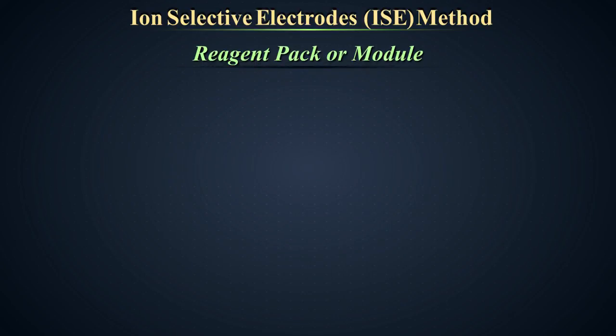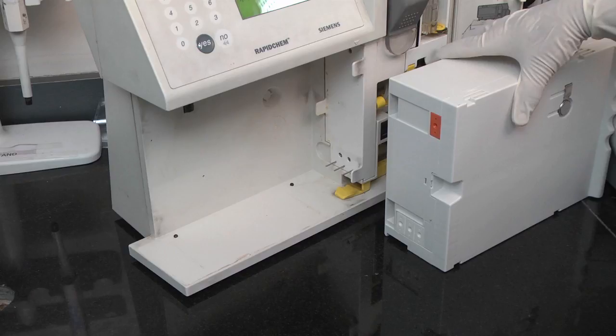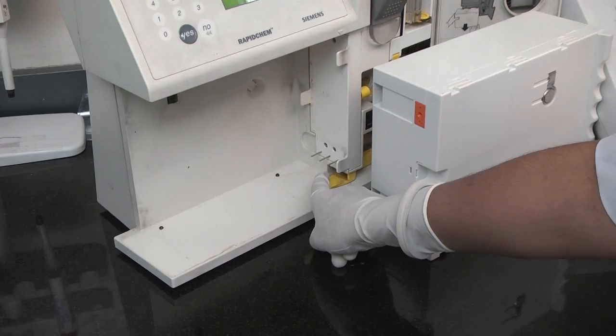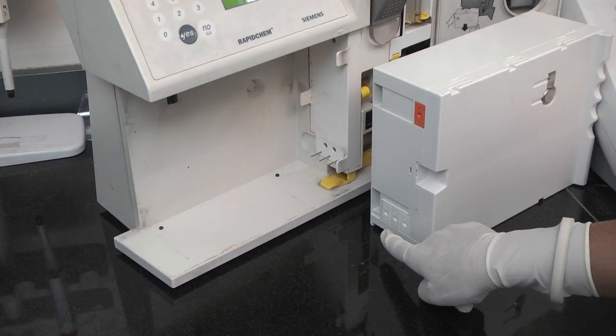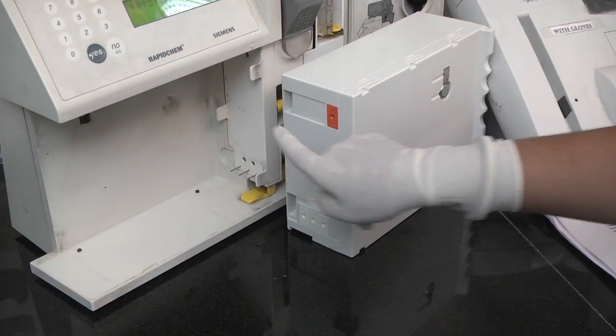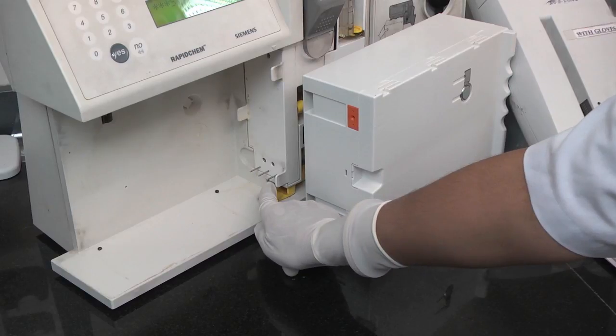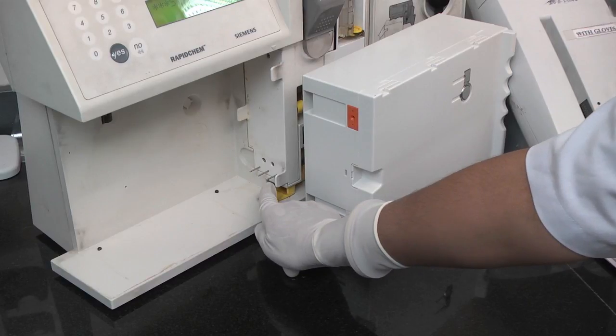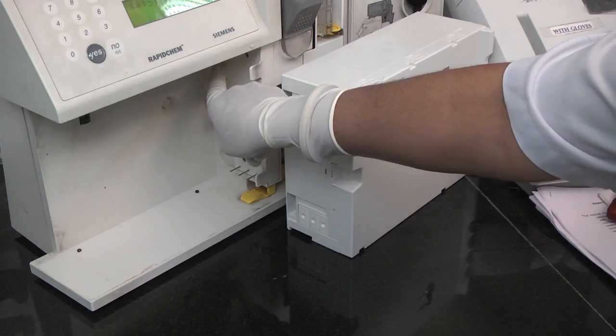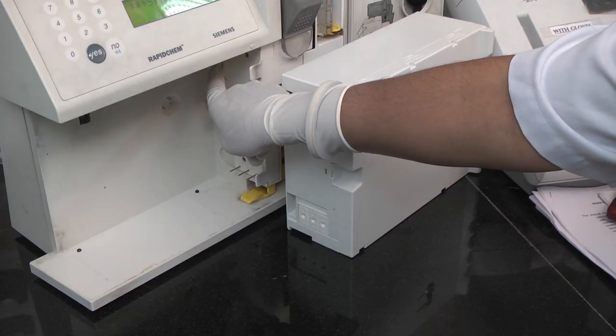Reagent pack or module. The reagent pack is a rectangular box which stores the reagents in the lower half and the waste is generated in the upper half. The left side of the pack has three inlets for the reagent tubes on the main body of the analyzer and also one inlet for the waste generated.